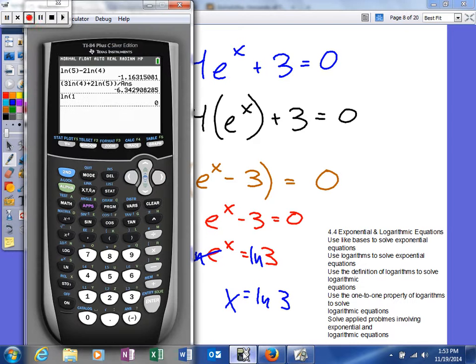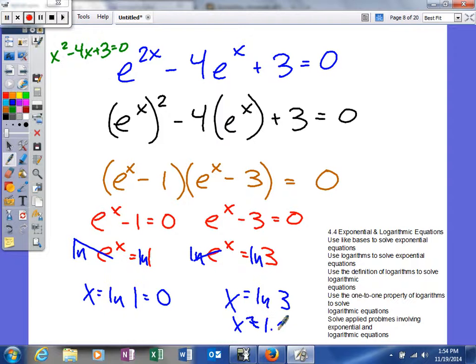But then the other one's not going to be so friendly. So we'll type in the natural log of 3. And as you can see, we get 1 decimal 0, 9, 9. So those are our two solutions when we actually get them.